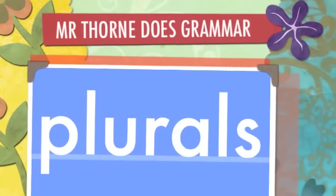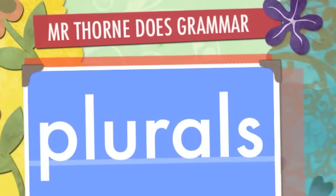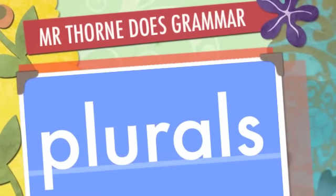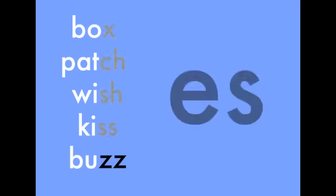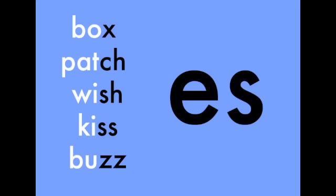We add plurals to words when there is more than one of something. Words that end in X, CH, SH, SS, and Z all end with ES when there are more than one.